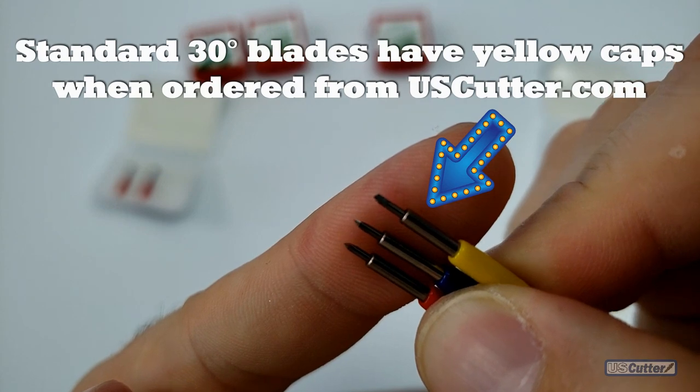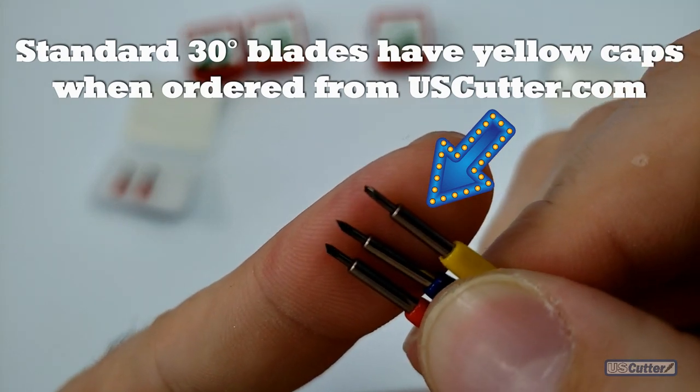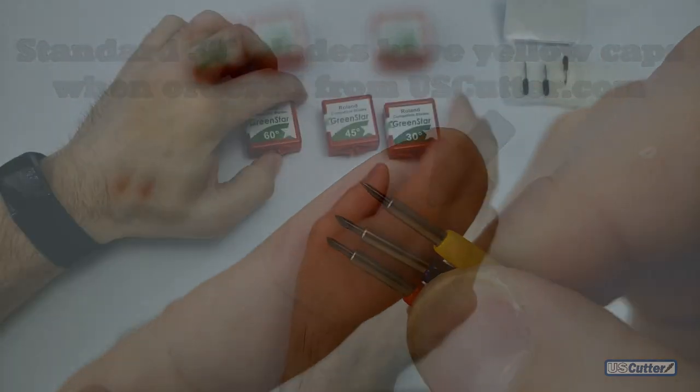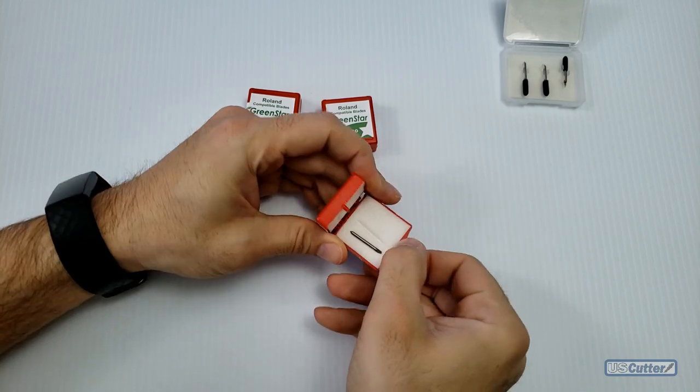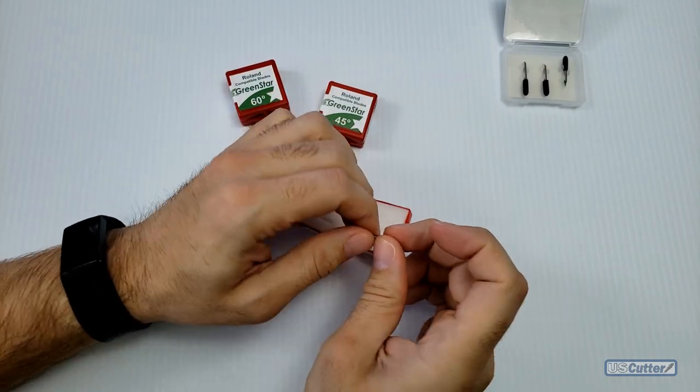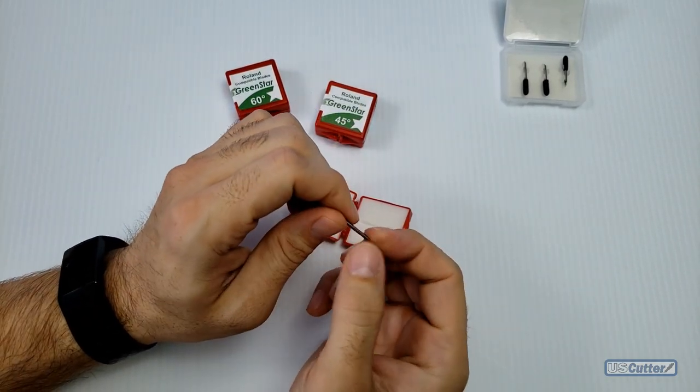30 degree blade is going to be used for your thinnest materials, maybe your specialty film or something like that. You can use it successfully to cut Oracle 651, 631, and many other adhesive vinyls, but it's not going to last as long as a 45 degree blade would.